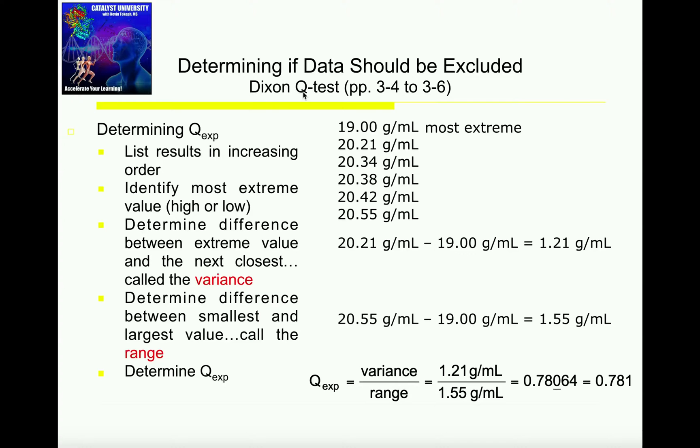The first thing we need to do is determine the difference between the extreme value, which is 19.00, that means the number we're trying to throw out, and the next closest. That's called the variance. So I need to determine the difference between 19.00 and the number closest to it, which is 20.21. To calculate the variance, I take 20.21 and subtract 19.00, and I get 1.21 grams per mL. That is the variance.